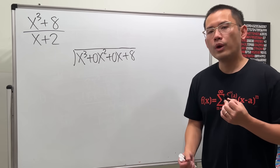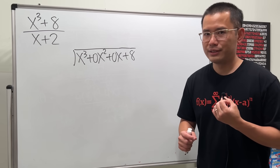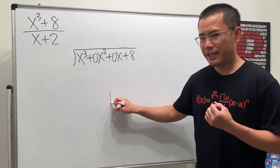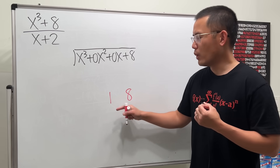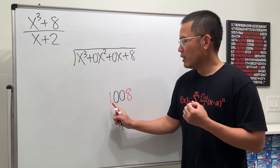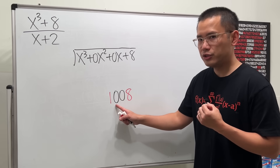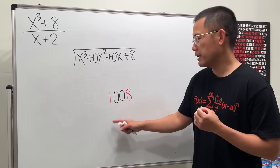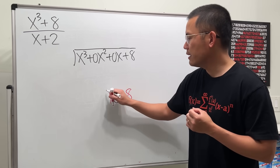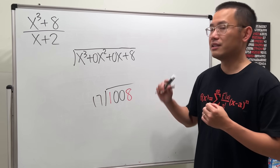Why do we need the placeholder zeros? Think of writing a check for $1,008. You wouldn't just write 1 and 8 — you need the zeros in the middle: 1 in the thousands place, 0 in the hundreds, 0 in the tens, and 8 in the ones place. Same idea here with polynomial long division.